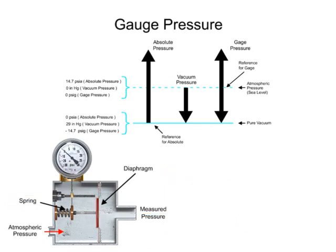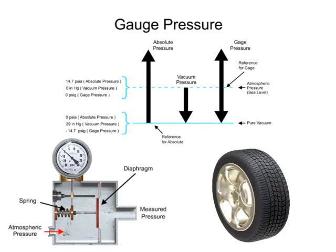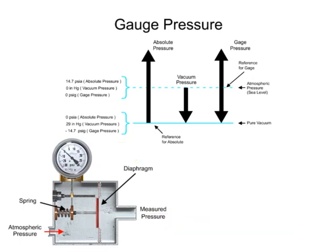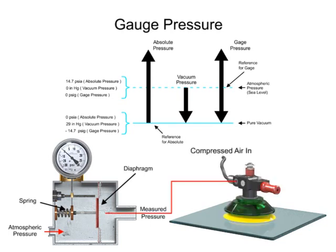Positive gauge pressures are demonstrated with an inflated tire. When the sensing element is attached to the tire, a positive pressure is indicated on the gauge. Negative gauge pressures are indicated on the gauge with pressures below atmospheric pressure. The maximum negative value for gauge pressure is pure vacuum, or negative 14.7 PSIG. Typical negative pressures include material handling of glass sheets using a vacuum gripper, where air is evacuated from the suction cup.